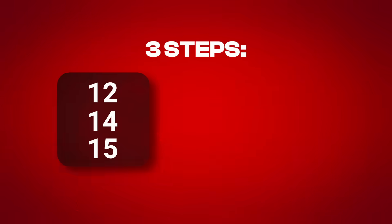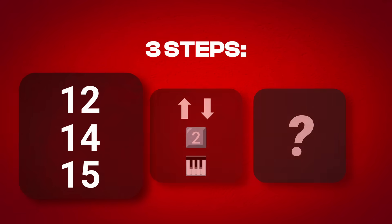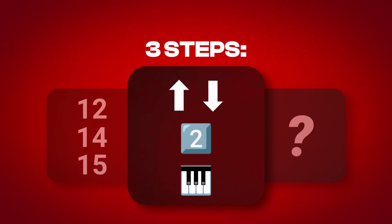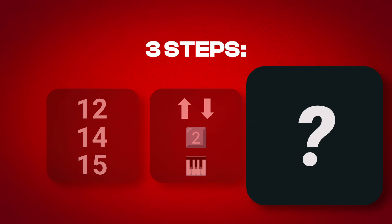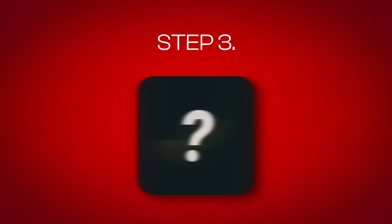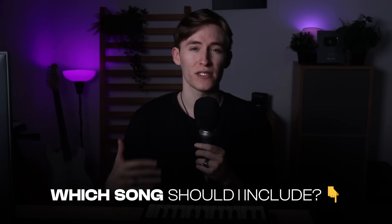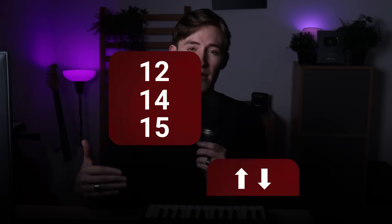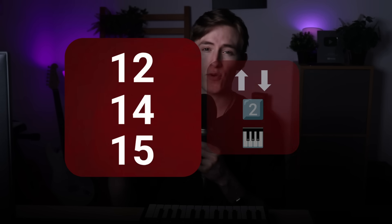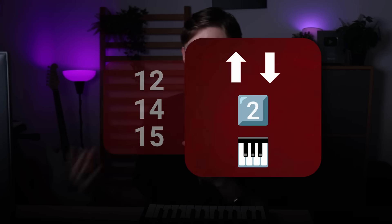So now you know the first step — the three Metro Boomin chord progressions — and the second step, which is the three biggest ways to apply those chords. That leaves us with step three: sound selection. I'm currently working on a deep analysis of Metro Boomin's sound selection and what makes a sample worthy. Let me know in the comments what songs I should include, and subscribe so you don't miss that video. Today you learned three basic hip-hop chord progressions and three ways they can be used.